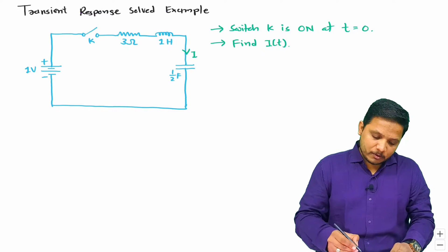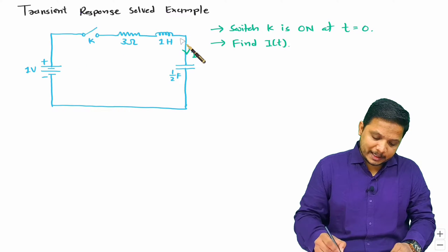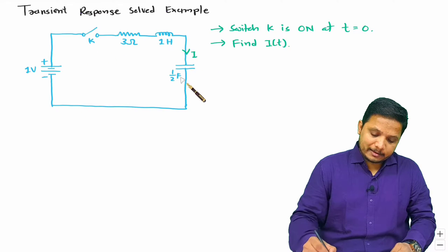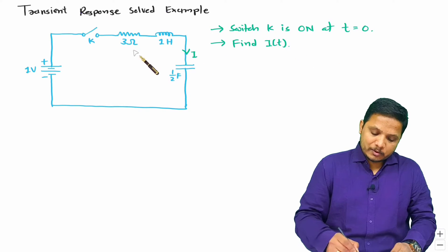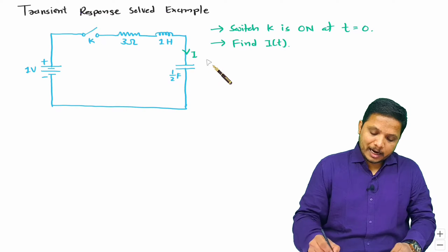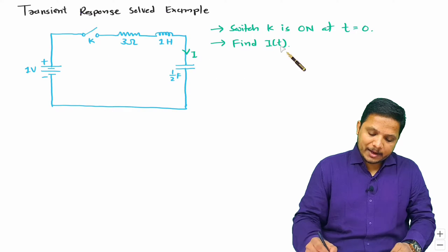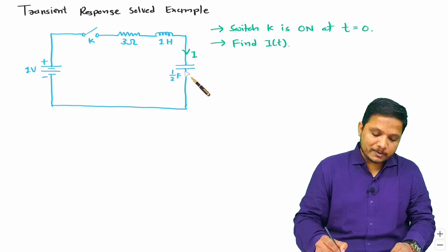Here we have a circuit in which switch K is getting turned on at t equals zero. We need to find the current i(t) passing through this link, as you can observe.